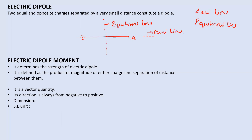Electric dipole moment determines how strong the electric dipole is — it determines the strength of the dipole. We denote it by small p, and it equals the product of the magnitude of either charge and the separation between them, where the separation is taken as 2l. So the formula is p = q × 2l.